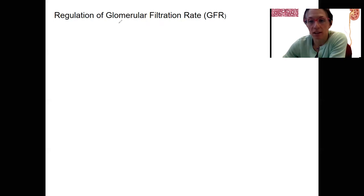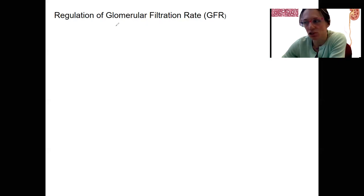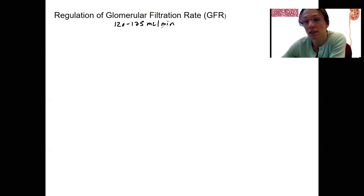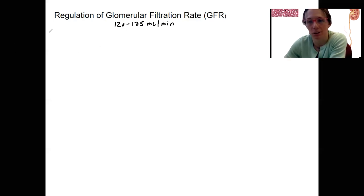Glomerular filtration rate is the volume that is filtered by the kidneys in one minute — that first step of the nephron where we go from blood to filtrate. This is typically about 120 to 125 milliliters per minute, so quite a bit of volume each minute that your kidneys are going to turn into filtrate. Most of this is going to be reabsorbed, but we're not talking about that yet.